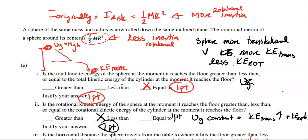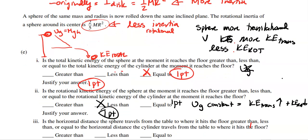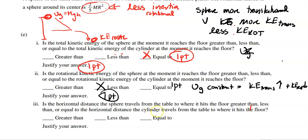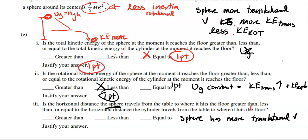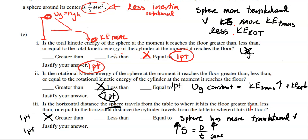Third sub-question: does the sphere travel a greater, lesser, or equal horizontal distance? The sphere has more translational velocity, so it is moving faster linearly when it leaves the table. The fall time is the same since it falls the same height. With greater speed and same time, the horizontal distance is greater than the cylinder's. Always check those boxes even if you're unsure of the justification.